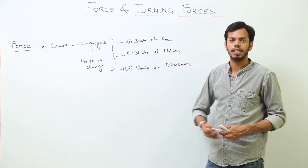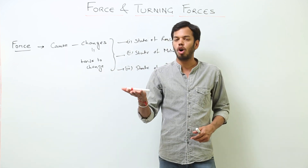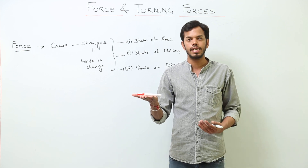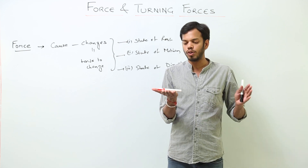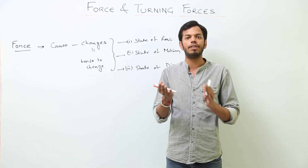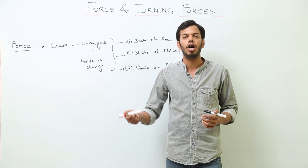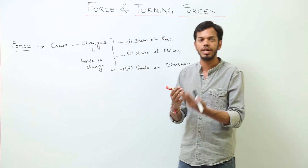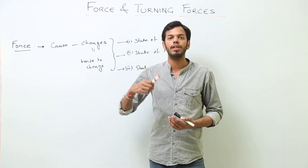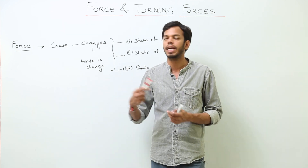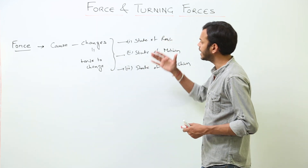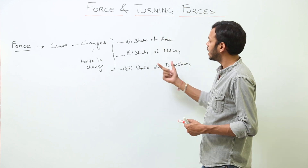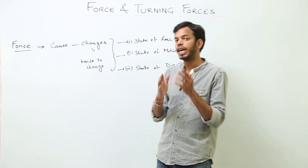Let's go one by one. First, how can a force change the state of rest? Suppose this object is stationary — it is at rest. When a force is applied on it, it will start moving. For example, if I throw it, the force is being applied on the body and the body starts moving. That is what it means to change the state of rest.